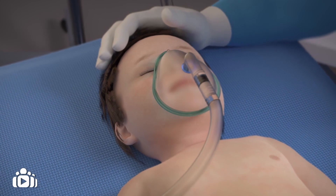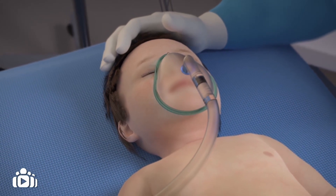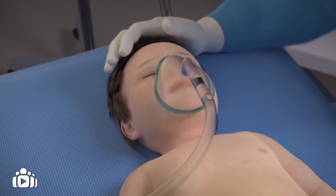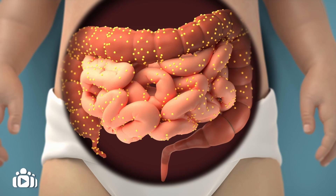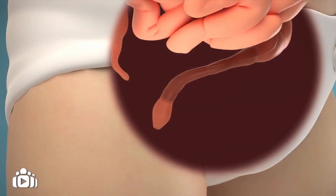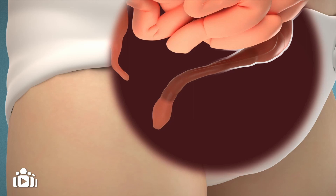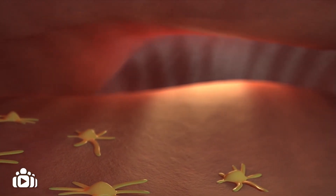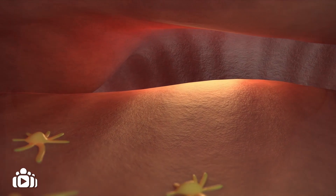This surgery is performed in the operating room with the baby under general anaesthetic. The aim is to remove the aganglionic bowel, which is the affected part of the bowel with no ganglion cells present. The transition zone should also be removed — the area of the bowel between the aganglionic part and the part containing a normal amount of ganglion cells, which is called the ganglionic bowel.